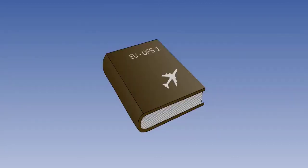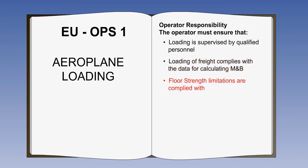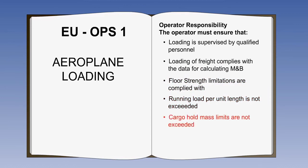EU Ops 1 requires the operator to ensure that the loading of its aeroplanes is performed under the supervision of qualified personnel, and that the loading of freight is consistent with the data used in calculating mass and balance. The operator must also ensure that floor strength limitations are complied with, along with running load, cargo hold mass limits and seating limits.